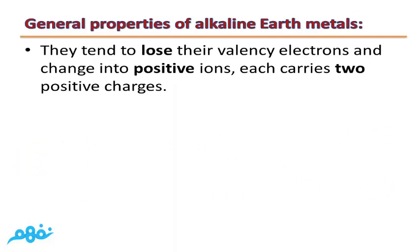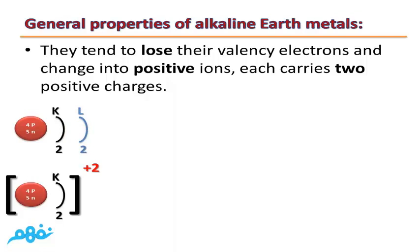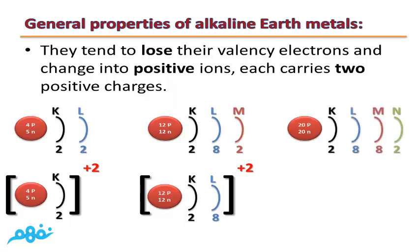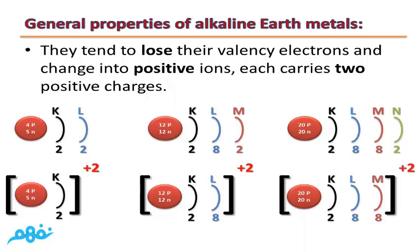The fourth property is they tend to lose their valency electrons and change into positive ions, each carrying 2 positive charges. Beryllium atom during chemical reaction loses 2 electrons and changes into a beryllium ion carrying 2 positive charges. Magnesium atom loses 2 electrons and changes into a magnesium ion carrying 2 positive charges. Calcium atom loses 2 electrons and changes into a calcium ion carrying 2 positive charges.